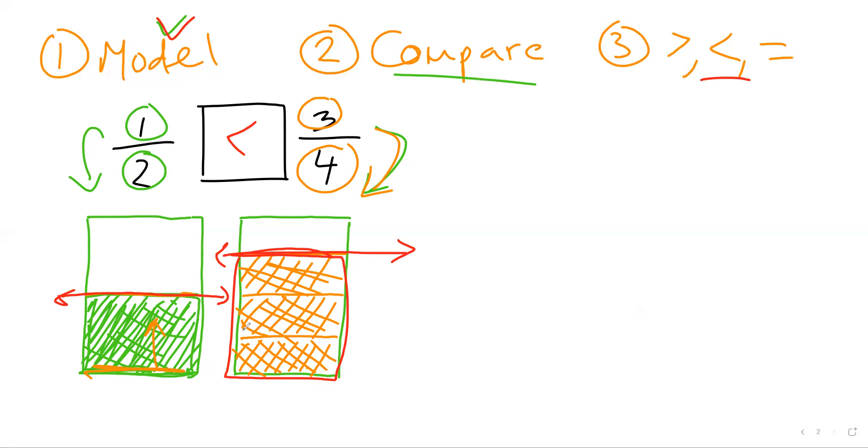So we modeled them side by side, same sizes. We compare. So I looked at which one had more shading or, again, I really like thinking about it as a glass of water. So which one has more water in it? And then we found the correct symbol to put in there or equality to put in there. And we see that one-half is less than three-fourths. So three-fourths is a bigger value.